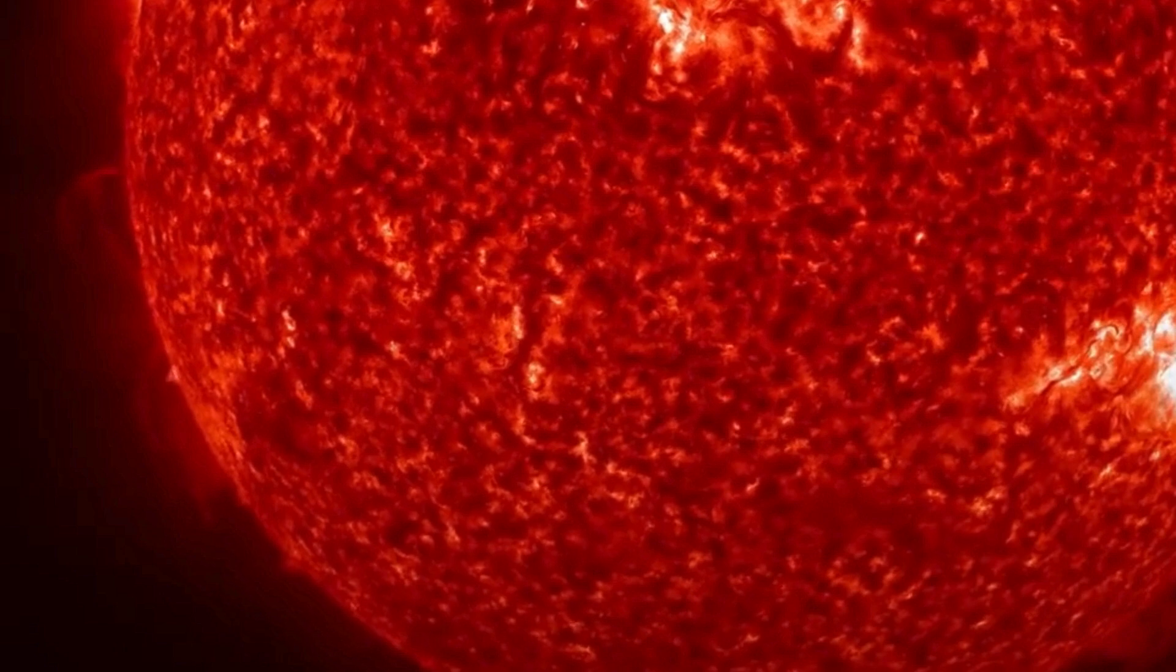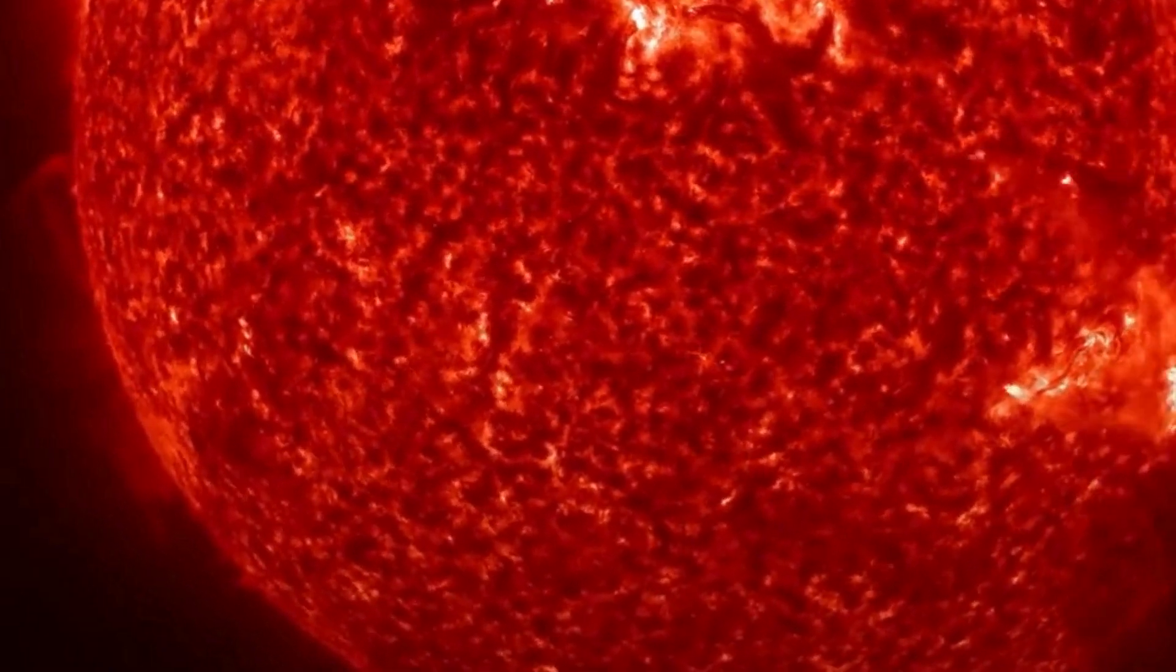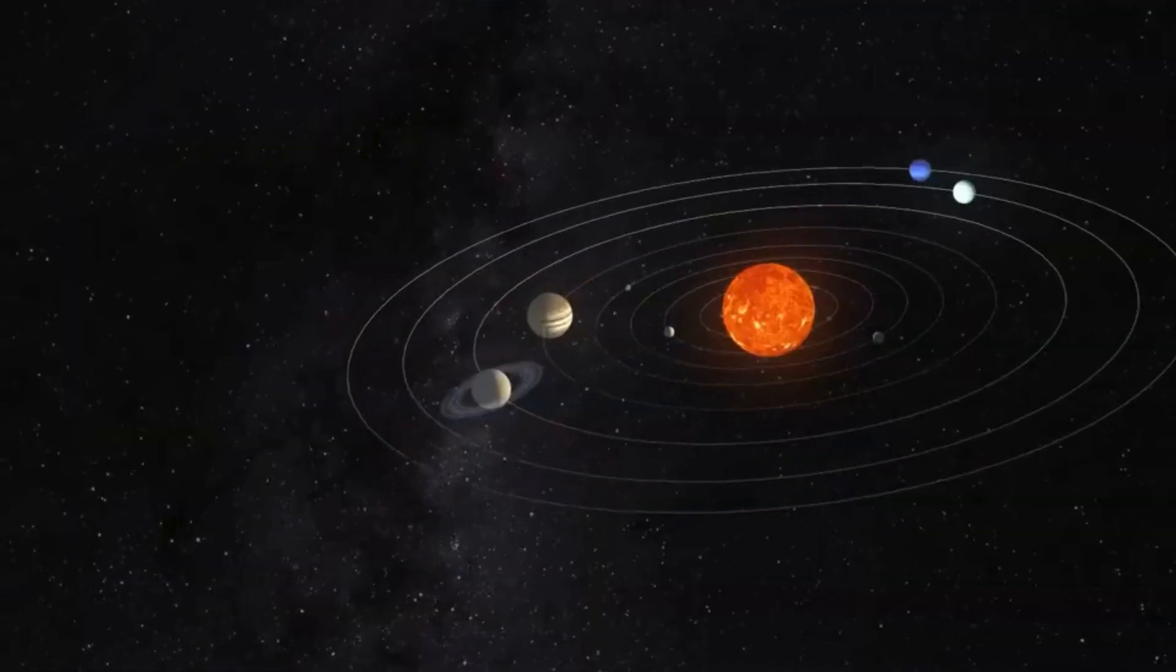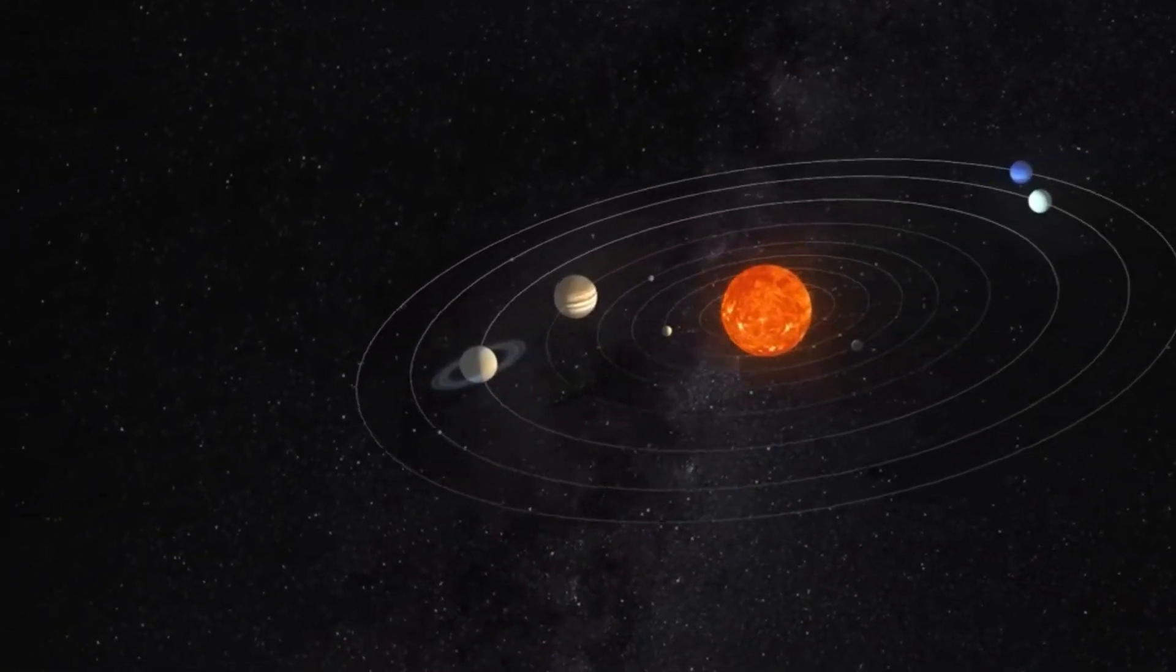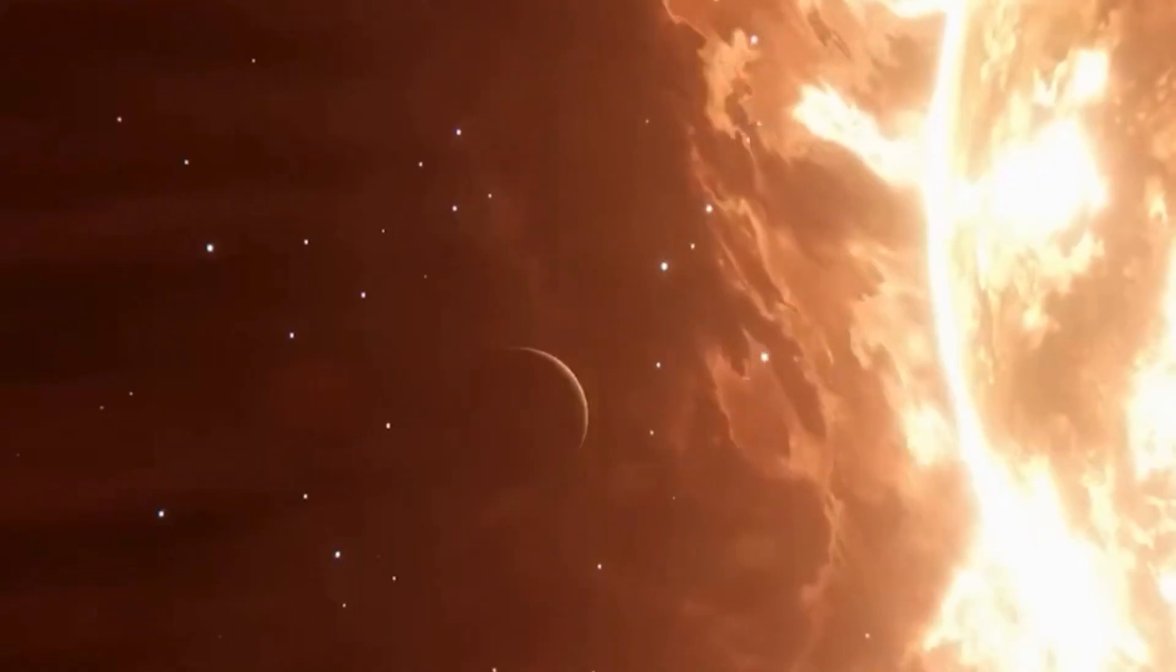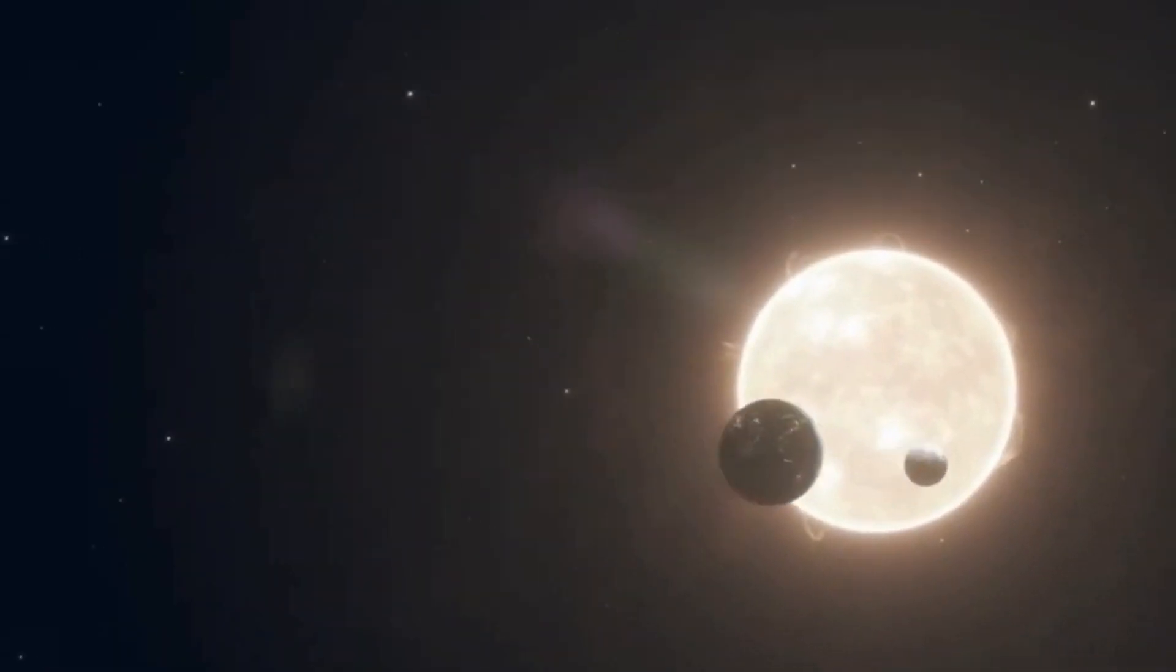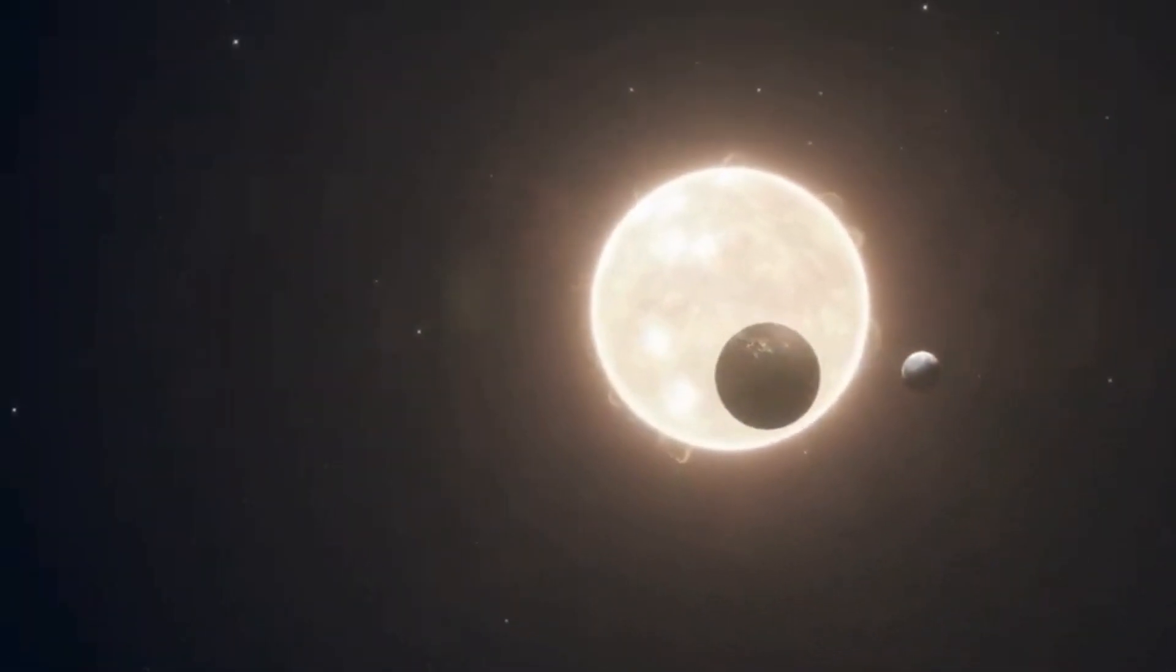The sun, the largest celestial body in the solar system, is a gas giant with a mass equivalent to 2 times 10 to the 30 kilograms. It produces energy equivalent to 3.84 times 10 to the 26 watts per second and converts 4.26 million tons of hydrogen into helium through nuclear fusion processes every second.